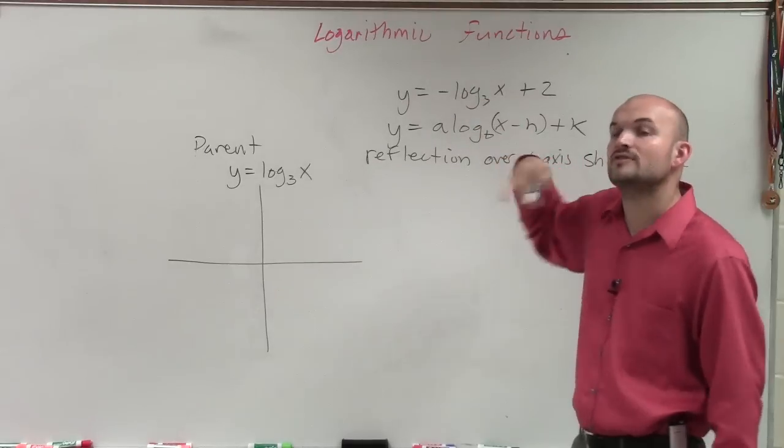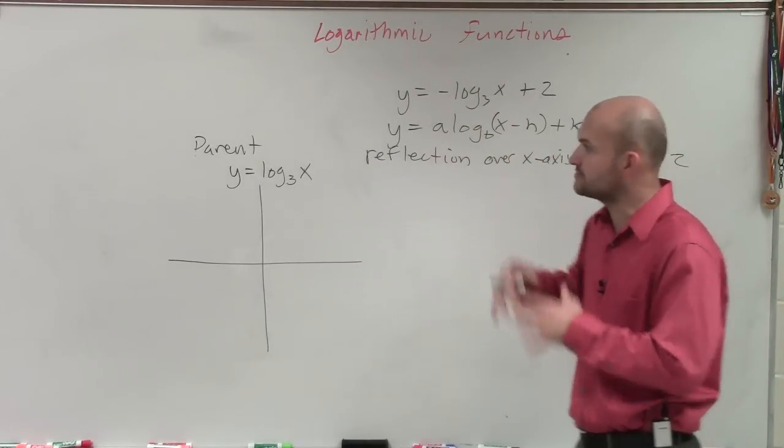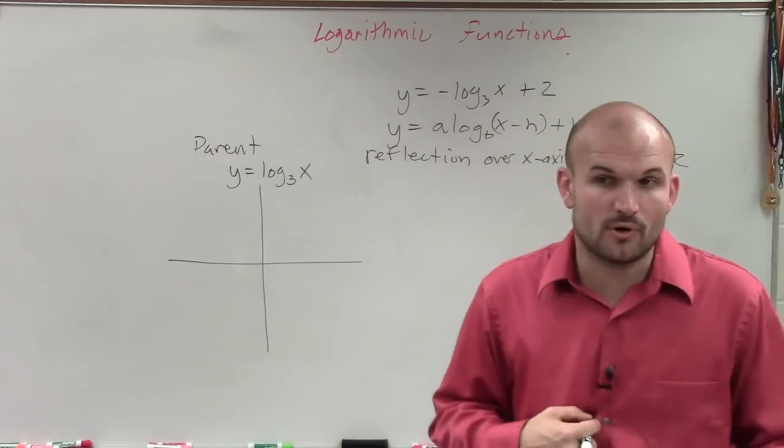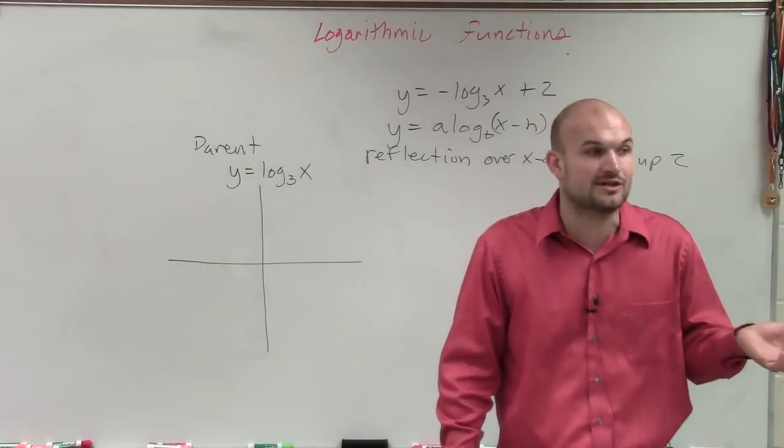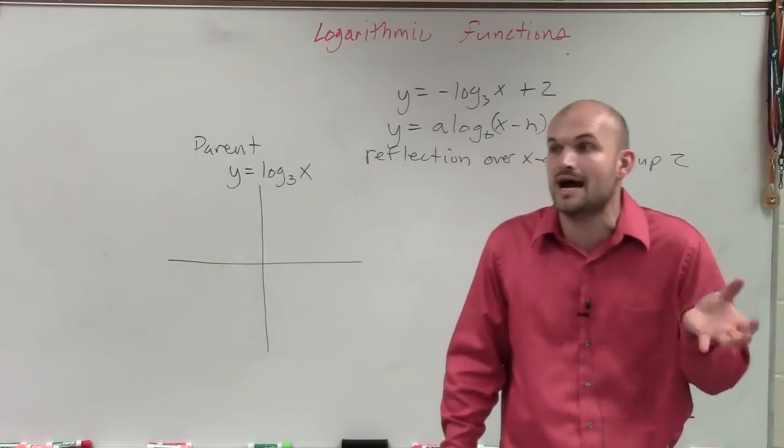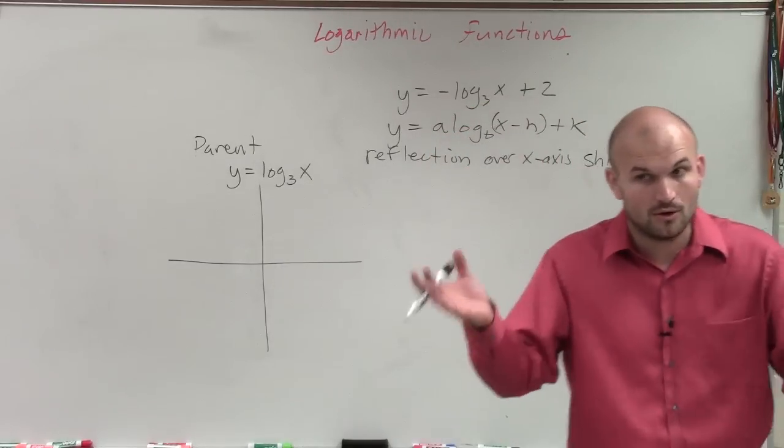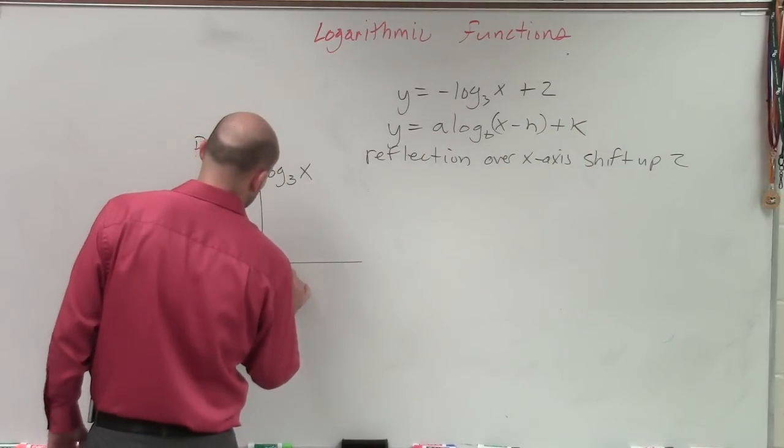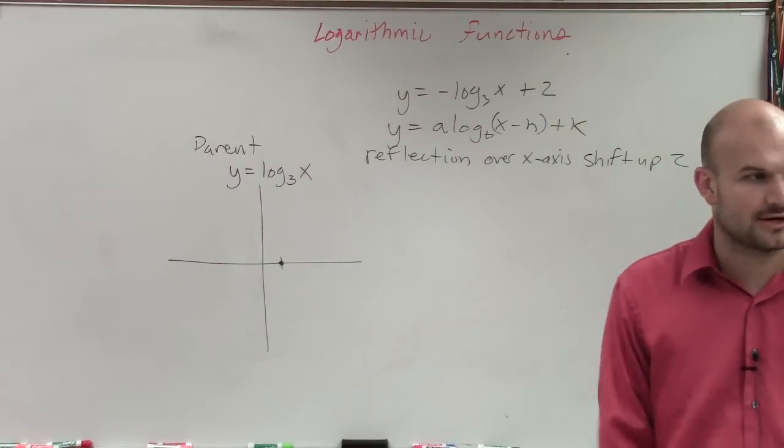We will add the reflection, and we will add the shift in a second. That is just the parent graph. We're going to add the transformations in a second. We just want to take the base. So there's a couple things that are important. All logarithms had exactly what was their y-intercept. Well, they didn't have a y-intercept. They have an x-intercept. And the x-intercept was what? 1 comma 0. All logarithmic equations, before we get to transformations, have an x-intercept at 1 comma 0.